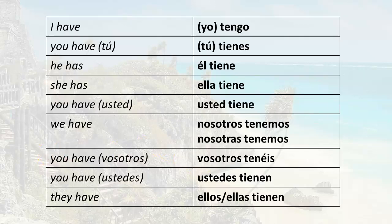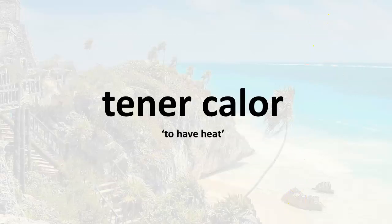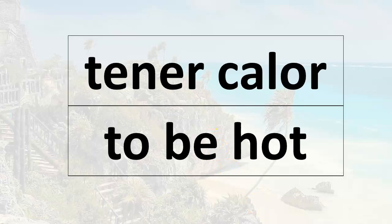Remember that you need to know all of the forms of tener to be able to use tener expressions. So here's the big question: what does tener calor mean? Literally, tener is to have, and calor means heat. So what does tener calor really mean in English? It means to be hot, in the sense of to feel hot.